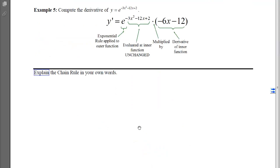Our last example of this, example 5, is to compute the derivative of y = e^(-3x² - 12x + 2). You can see, hopefully, that the outer function is the exponential, and the inner function is this polynomial that was plugged into the exponential function.